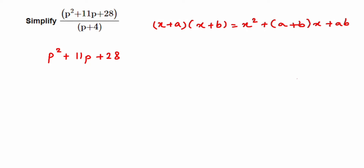Comparing our expression with the identity: in place of x² we have p², in place of (a + b) we have 11 (the coefficient of p), and in place of ab we have 28. So I need to find two numbers a and b such that a × b = 28 and a + b = 11.